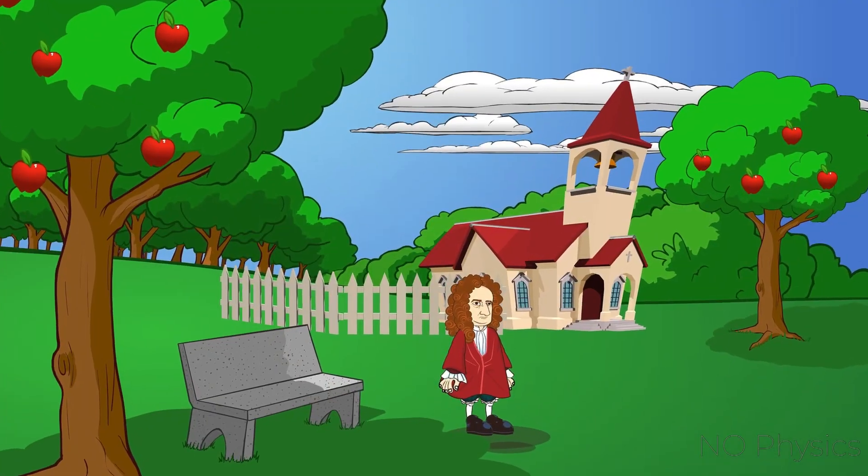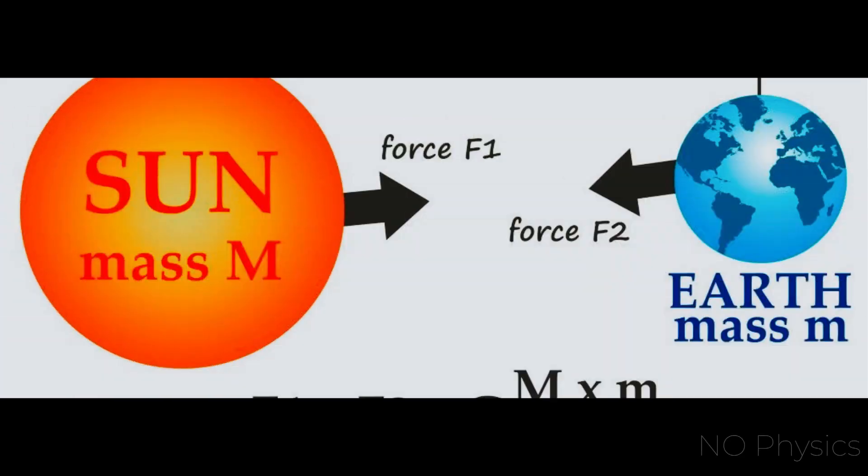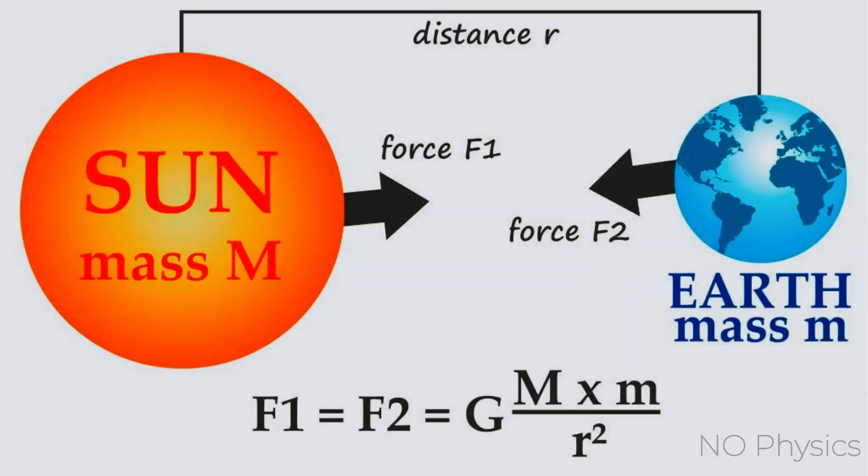In the 17th century, Isaac Newton discovered that the strength of gravitational force decreases as the square of distance between two objects.